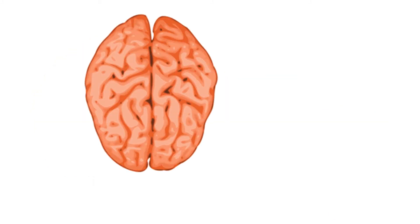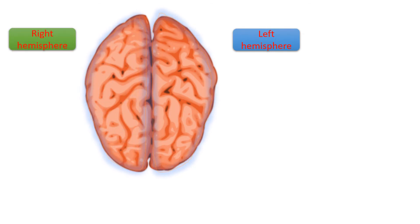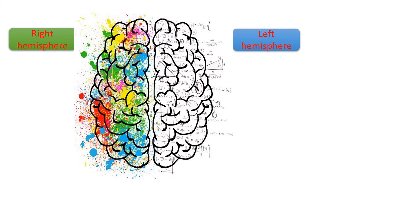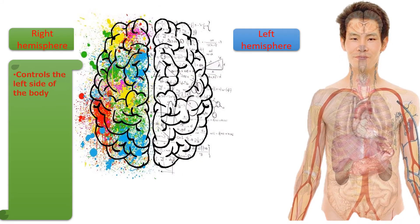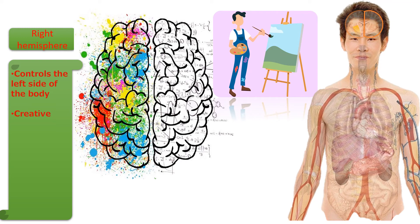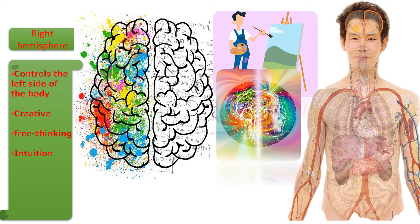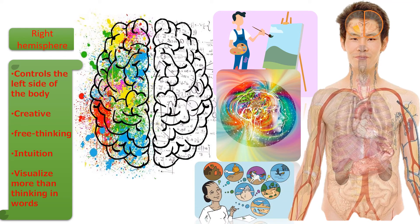The cortex of the brain contains two parts: the left hemisphere and the right hemisphere. Both hemispheres have different functions. The right hemisphere controls the left side of the body, so all functions of the left side are controlled by the right hemisphere. It also deals with creativity, free thinking, intuition, and it visualizes more than thinking in words.